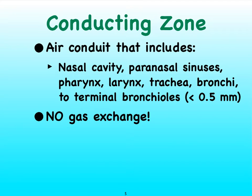Recall that the conducting zone starts with the nose and ends at the so-called terminal bronchioles, which are the last bronchioles that do not allow for gas exchange. Once we hit the point in the respiratory tract where we do see gas exchange occurring, we've switched over to what we call the respiratory zone. The last bronchioles where we do not see gas exchange are called the terminal bronchioles — pretty small bronchioles already.